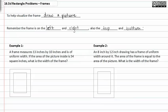In example one, a frame measures thirteen inches by ten inches. This is the frame, it's thirteen by ten and it's of uniform width, meaning this side that we don't know, this side that we also don't know, as well as this one and this one are all x because we don't know what the width is, but it's all the same width. If the area of the picture inside is equal to fifty-four square inches, what's the width of the frame?